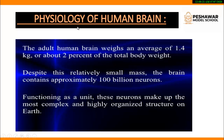Now we will talk about the physiology of the human brain. Physiology is that branch of biology in which we study the structure and function of any organ. First, we will talk about the weight of the human brain. The average weight of the human brain is approximately 1.4 kg in an adult human being — around 22 years of age — which is approximately 2% of our body weight. Although the brain has a very small mass, it performs very complex functions and contains hundreds of billions of neurons.